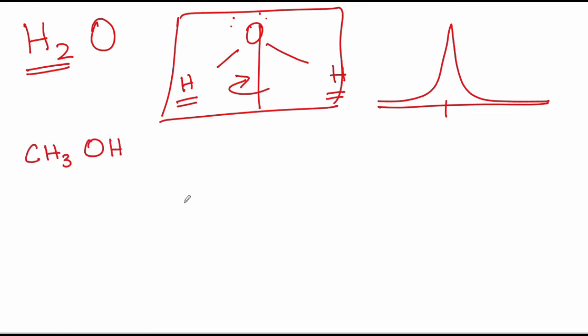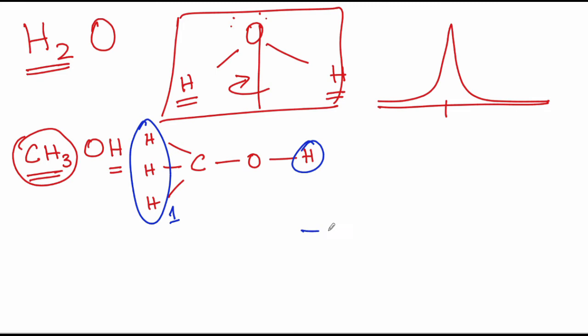Let us go to methanol. In methanol, this methyl group and the proton are different from one another. And within this methyl group, since there is fast rotation about the CO bond, these three protons end up being equivalent to one another, while this ends up being different. So, when you try to get the NMR spectrum of methanol, you are going to get something of this sort. You get two resonances. This will be the resonance for the methyl group. This will be resonance for the hydroxyl proton present in methanol.